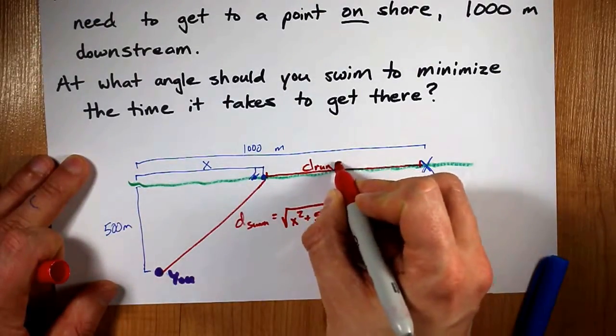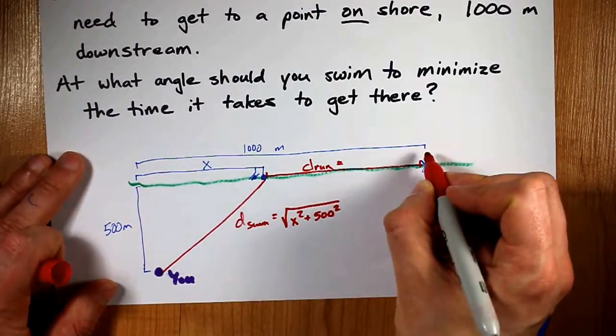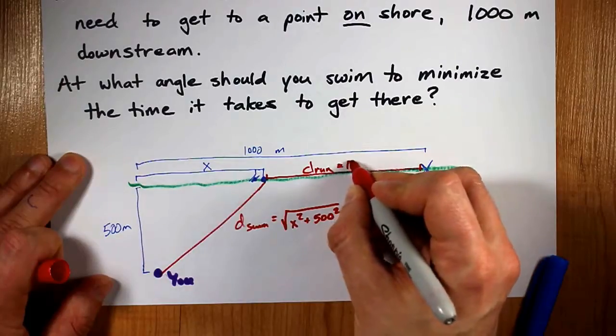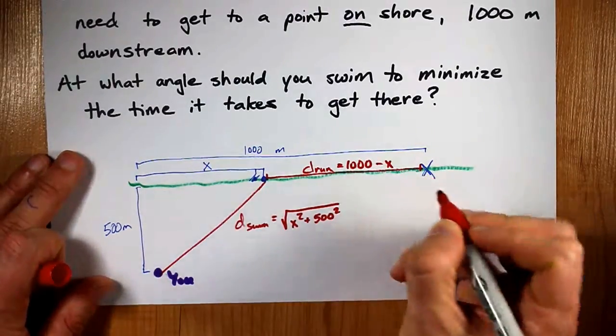Then what distance are we going to have run? The answer to that is easier, because it was a full kilometer, a full thousand meters. But we're shaving x off of that, so it's just 1000 minus x.